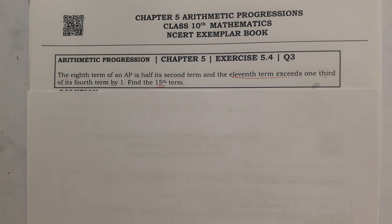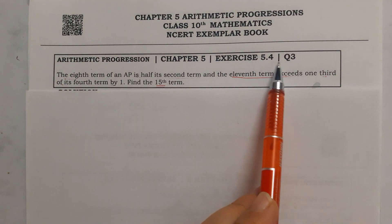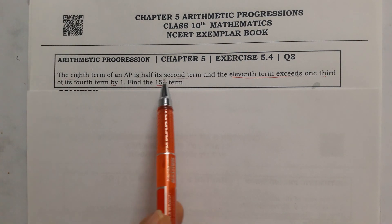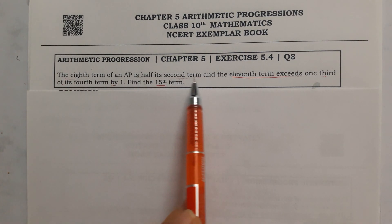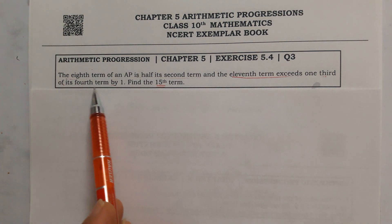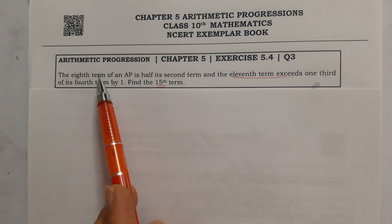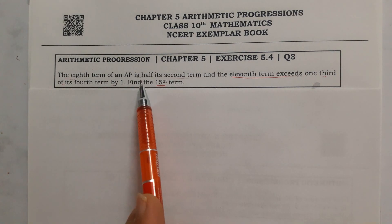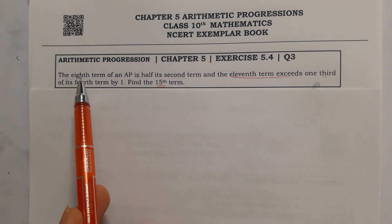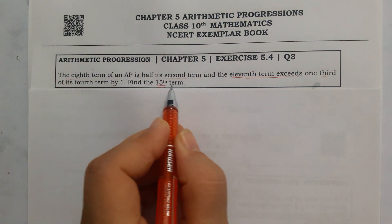Hello students, welcome to my channel. In this video we are solving Exercise 5.4, question number 3. The 11th term of an AP is half its second term, and the 11th term exceeds one third of its fourth term by one. We have to find the 15th term.